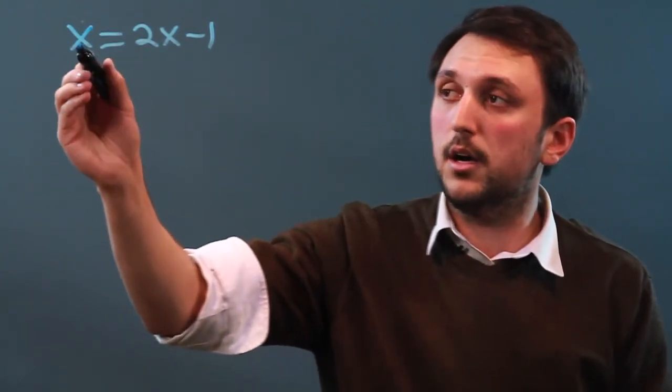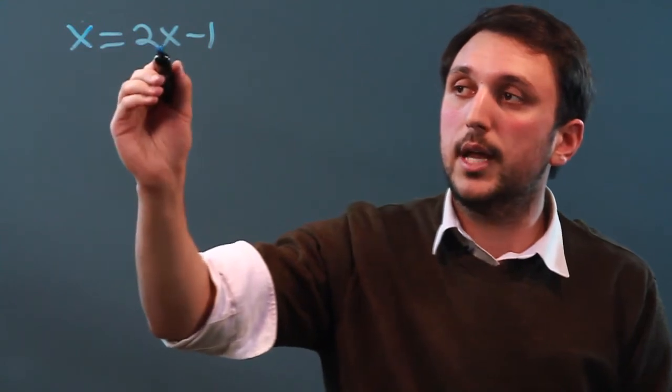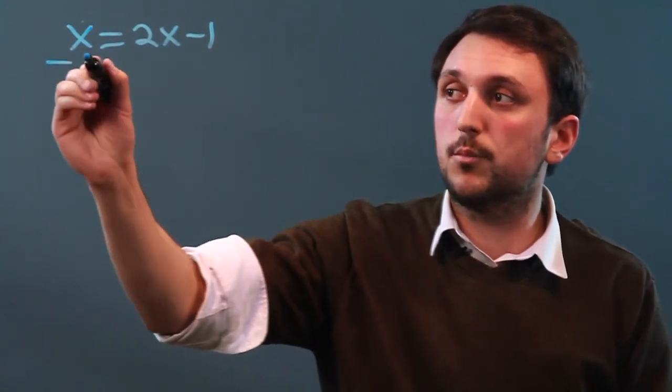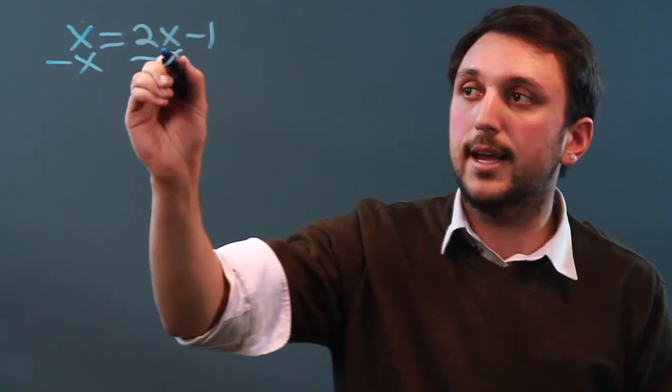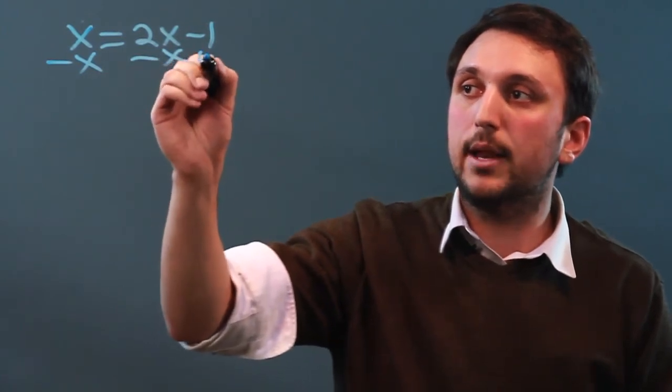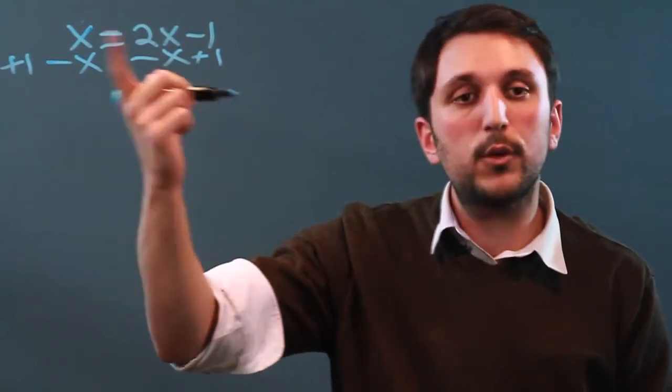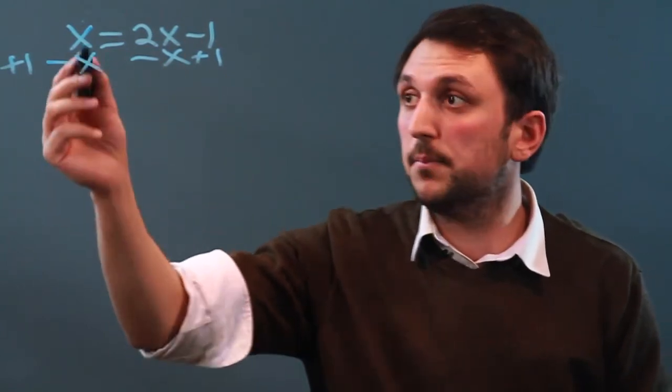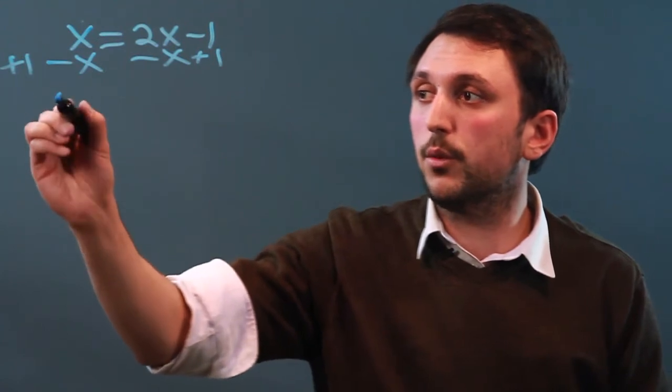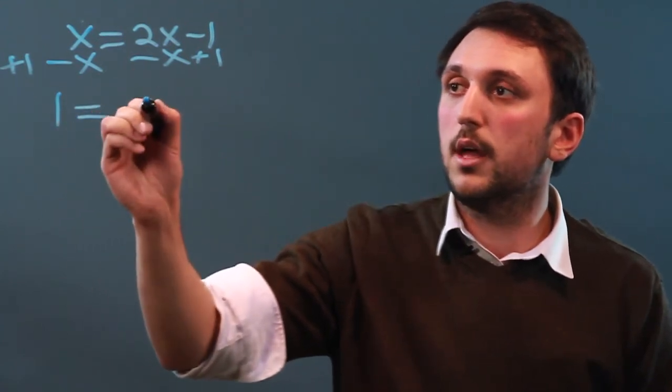So here we have a plain old x, and we have 2x. So we can subtract x, subtract x, and we can add 1, and we can add 1 to each side. And as long as we do it to both sides, the equation stays the same. So here we end up with 1 equals x,